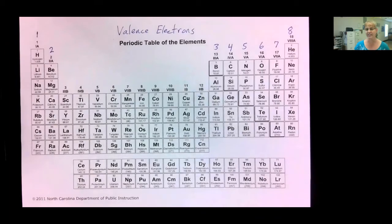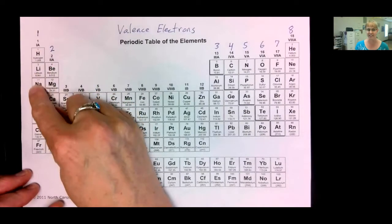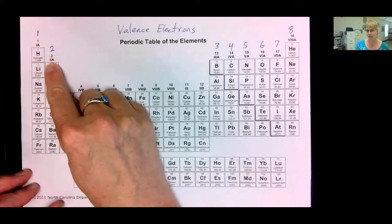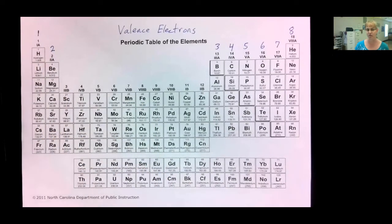And when we look at the periodic table, there's actually a pattern of the valence electrons. Group 1A has one valence electron. Group 2A has two valence electrons. They have different numbers of inner electrons, but the number of outer electrons is the same.